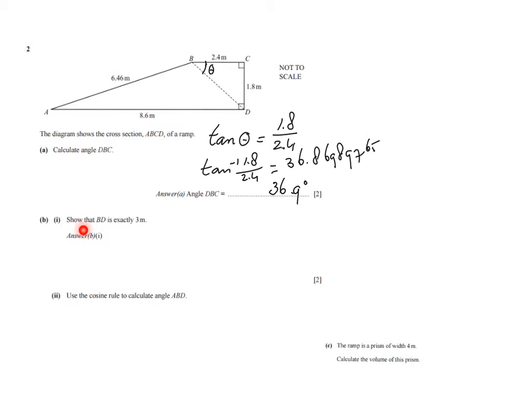Show that, they say, BD is exactly 3 meters. I always like these questions because they basically give you the answer. We just have to show that that is 3 meters. And we cannot use that information, that it's 3, in order to prove it. We've got to prove it differently.